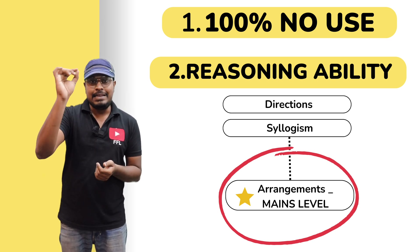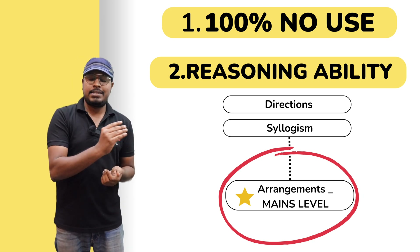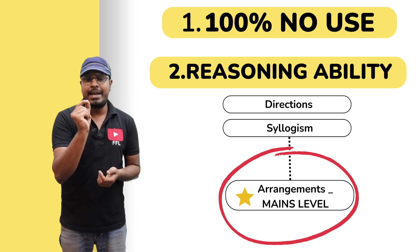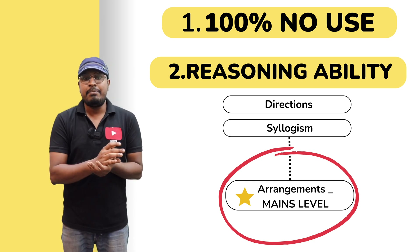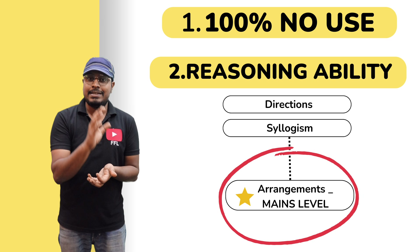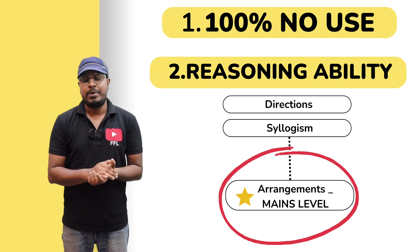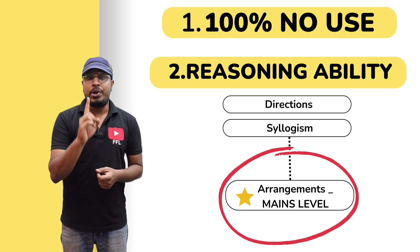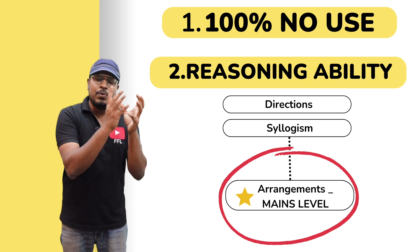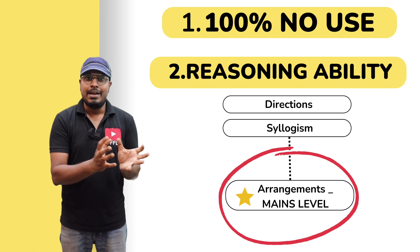In the reasoning ability section, when you scroll down to the last, you can see a test called 'Seating Arrangement Mains Level.' You can see the same question as a test for 15 minutes — what I am going to teach now. So first, what you need to do is write the test. And if you can get 5 out of 5, extremely good.